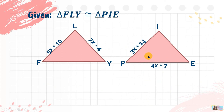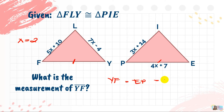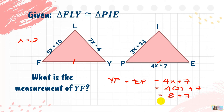Now, if X equals 2, what is the measurement of side YF? The congruent counterpart of side YF is side EP. Side EP is 4X plus 7, so: 4 times 2 plus 7 equals 8 plus 7 equals 15. Therefore, side YF and side EP are both 15.